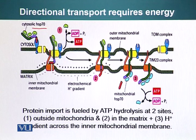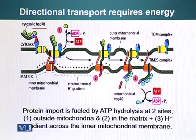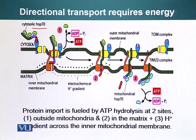Straight proteins can enter through the TOM complex pore without spending any additional energy directly. So if you keep a protein in a straight configuration and deplete ATP from your system, the protein will still go through the TOM complex. This part gets its energy from the heat shock proteins or scaffold proteins keeping the protein straight.